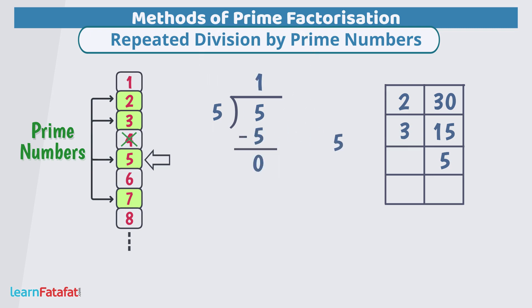So, write divisor 5 here and quotient 1 here. Quotient is 1 so we will stop here. These are the prime factors of this number. Let's write 30 in the form of product of prime factors. 30 equals to 2 multiplied by 3 multiplied by 5.